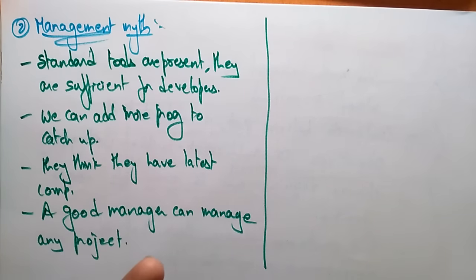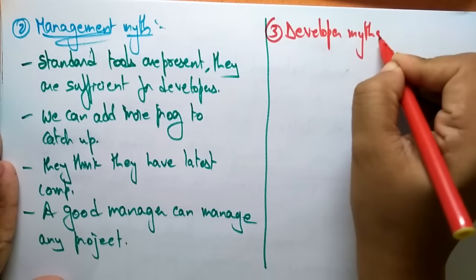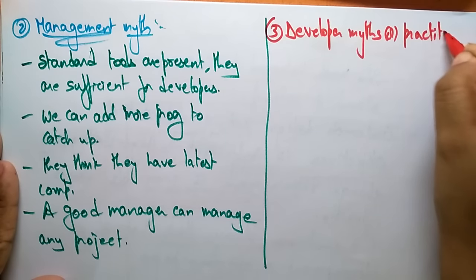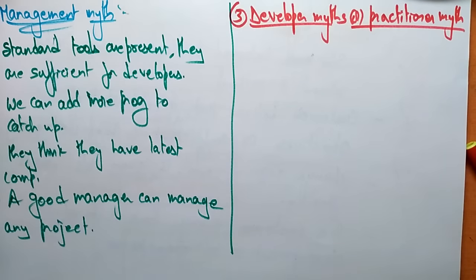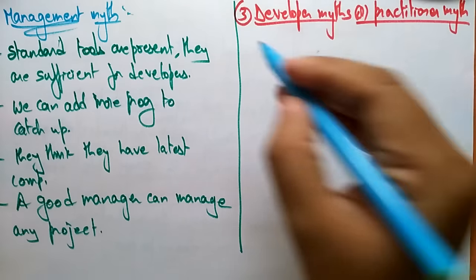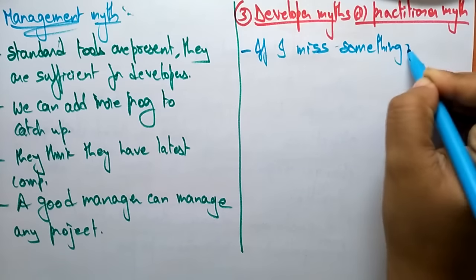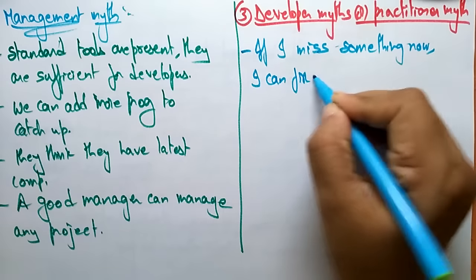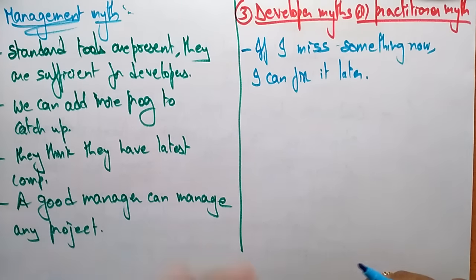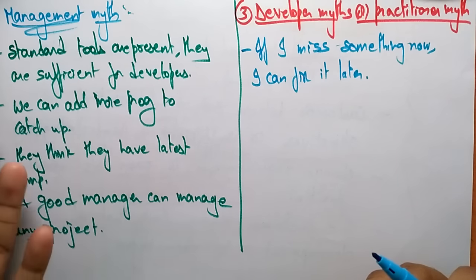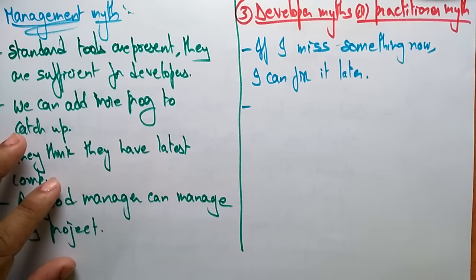Now coming to the third type: developer myths, also called practitioner myths. What does the developer believe about the software? The developer thinks: if I miss something now, I can fix it later. Whenever writing code, even knowing something was missed, they believe it can be fixed later — if no error appears it is fine, if an error appears then they will think about it.